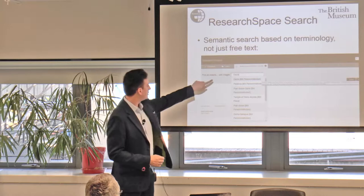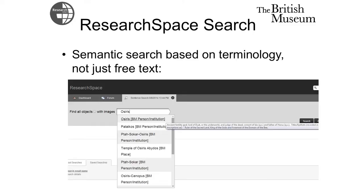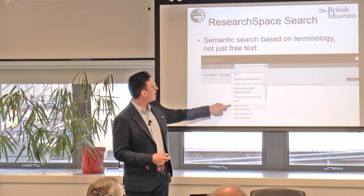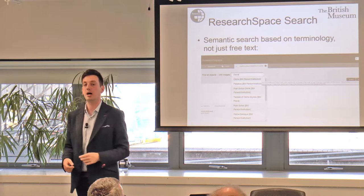If I put in Osiris, I'm told the top thing in the dropdown is that the British Museum has a person — actually a person institution — but there are other kinds of things I might be picking: the Temple of Osiris, which is a place. Each institution might have different terminologies, or you might have mappings between them. With Rembrandt, for instance, there are Rembrandt-related things where you'll see multiple institutions already aligned.